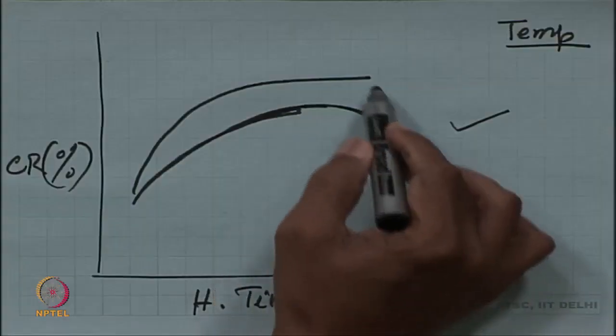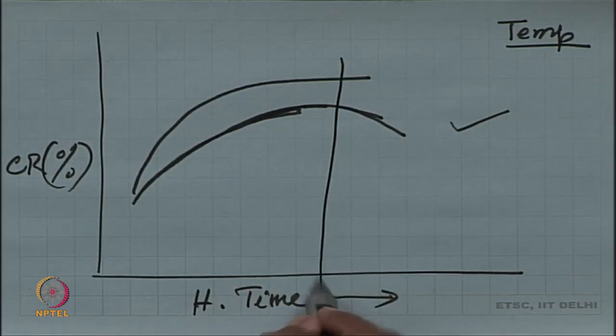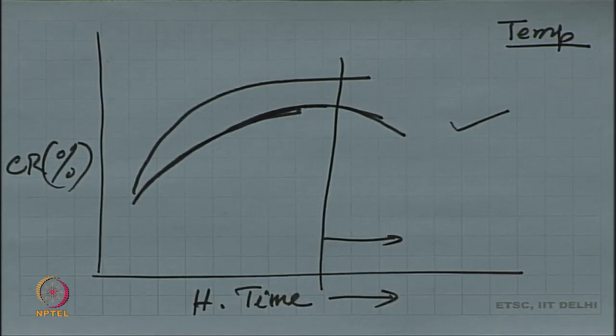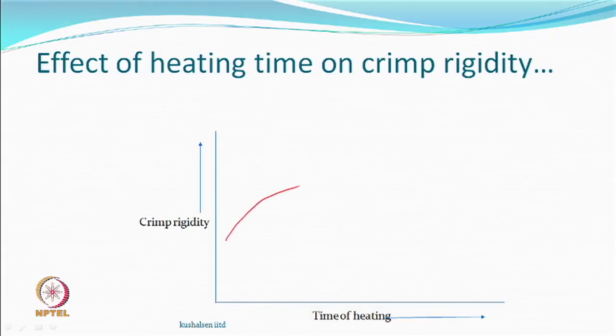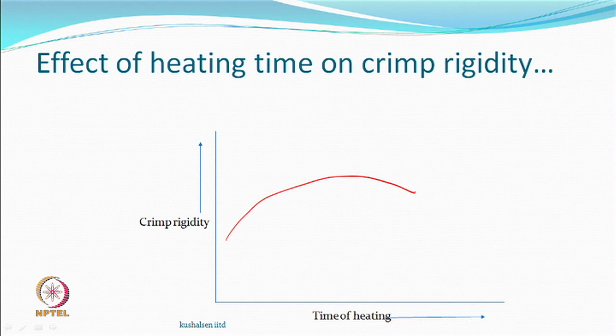Time has a positive effect as well as a negative effect on crimp rigidity. Although you may be lucky with your optimized time, if you go beyond this you can get some degradation which would result in loss of crimpicity as well. And who wants to increase the time? Increasing the time means machine speed is slower, while you want more production — so there is a tendency to go for faster speed. But during research you do explore it.